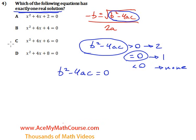Now we have ax² + bx + c = 0. Let's identify a, b, and c for each equation. For option A, we have a = 1, b = 4, and c = 2.